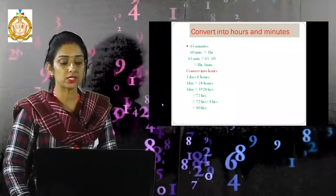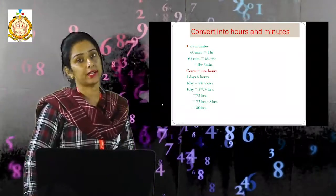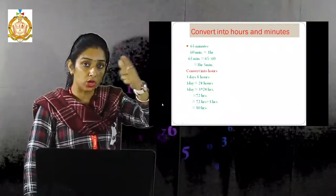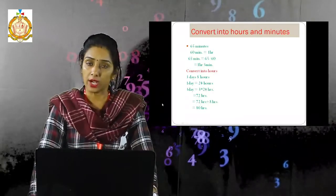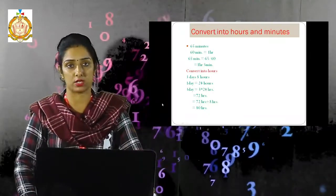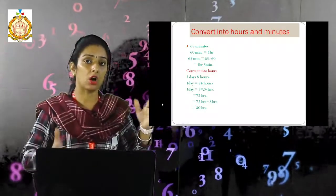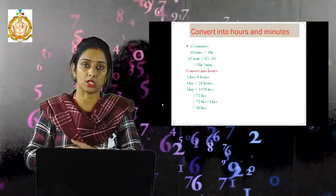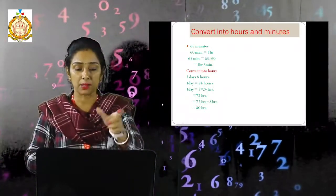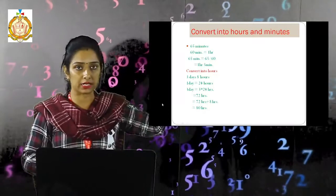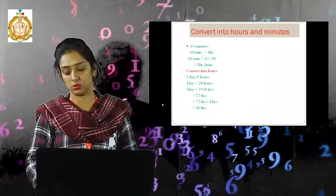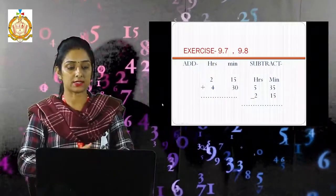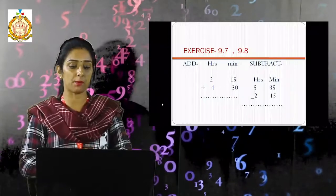Next, convert into hours: 3 days and 8 hours. We know 1 day equals 24 hours. So 3 days equals 3 multiplied by 24, which is 72 hours. Plus the 8 hours already in the statement gives 72 plus 8 equals 80 hours.